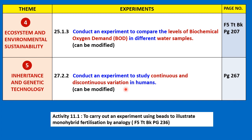The last experiment is from the topic on variation: conduct an experiment to study continuous and discontinuous variation in humans. Of course they cannot ask you to conduct a survey on students during the practical test, but they can give you pictures or samples showing continuous or discontinuous variation for you to analyze. Similarly, for inheritance, there is an experiment using beads to illustrate monohybrid fertilization by analogy, found in the Form 5 textbook on page 236. These experiments can be modified using the analogy method — using non-living items to represent organisms — and conducted in the lab.